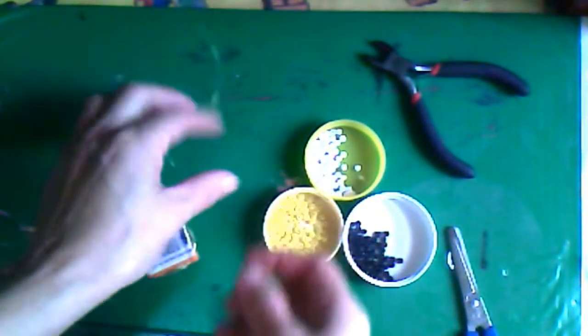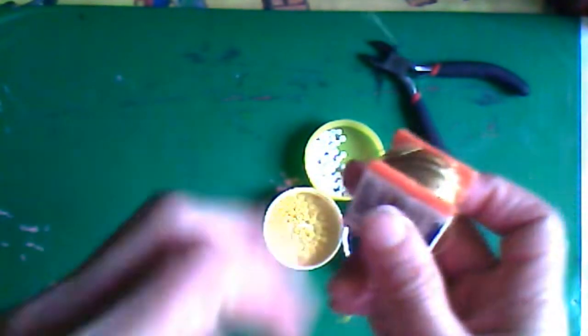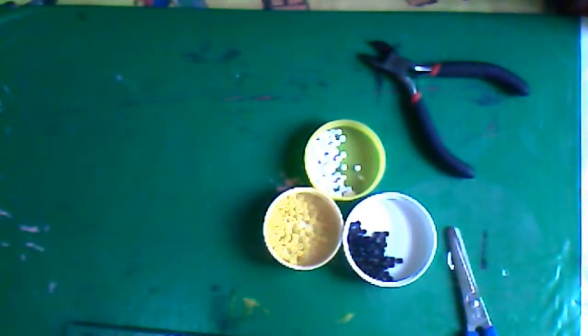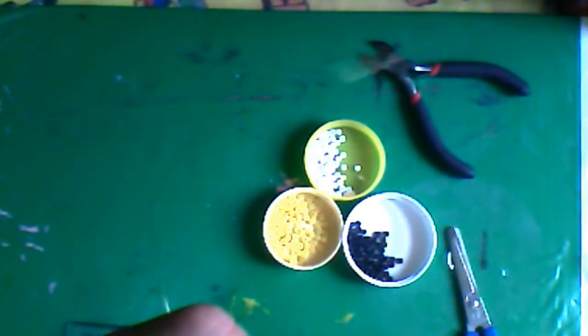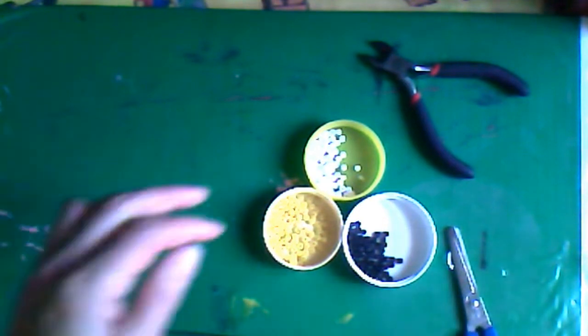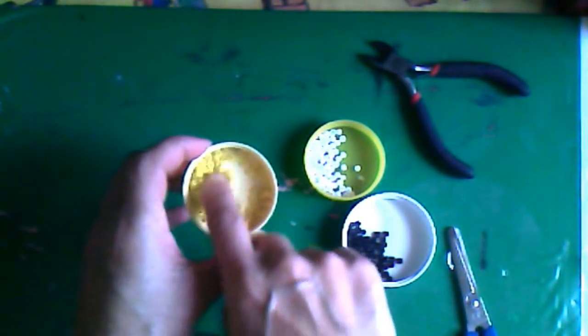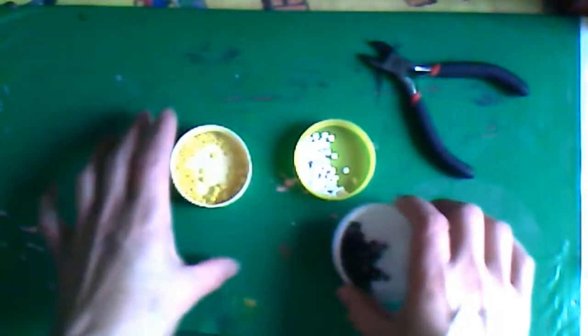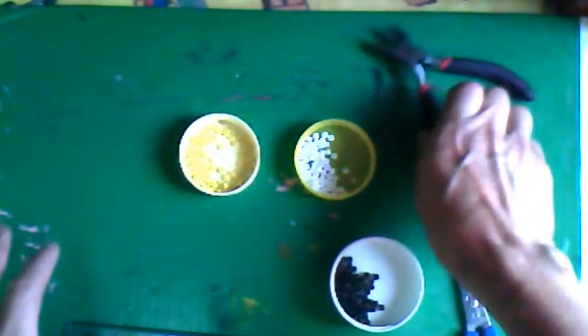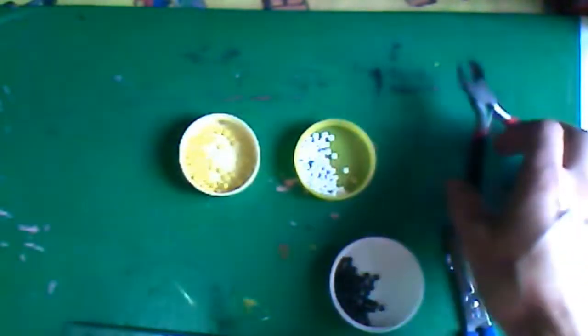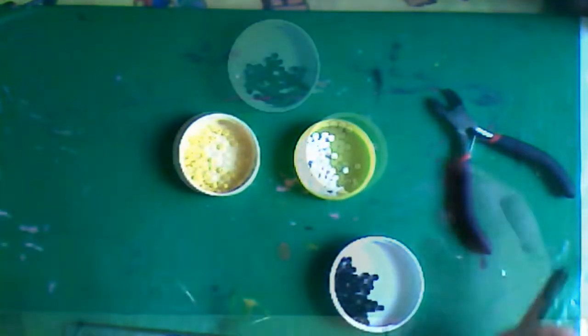Para hacer la primera parte de este collar, vamos a empezar con nuestra abejita. Para ello necesitamos unos 25 centímetros de este alambre de latón para Shakira. Lo puedes comprar en Parisina, muy económico. Vamos a necesitar Shakirón amarillo, blanco y negro. También necesitamos pinzas o tijeras para cortar nuestro alambre de latón.